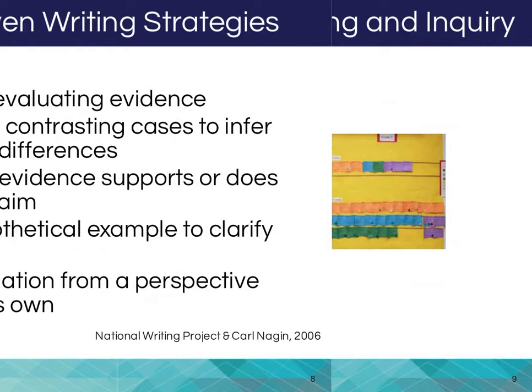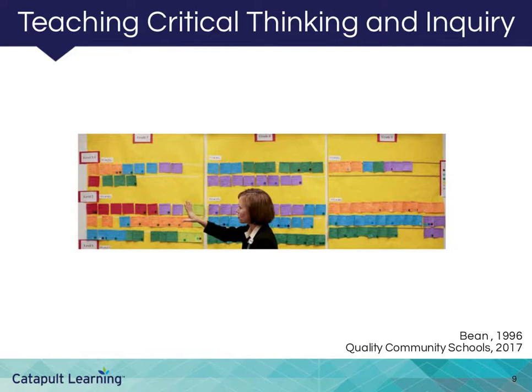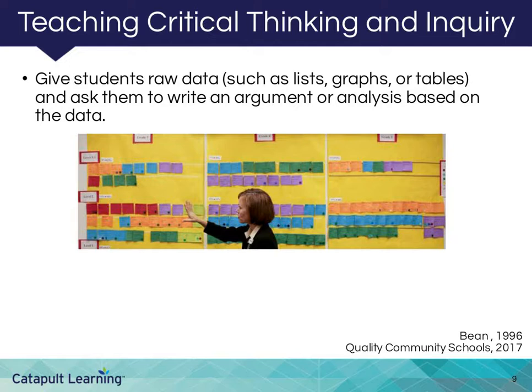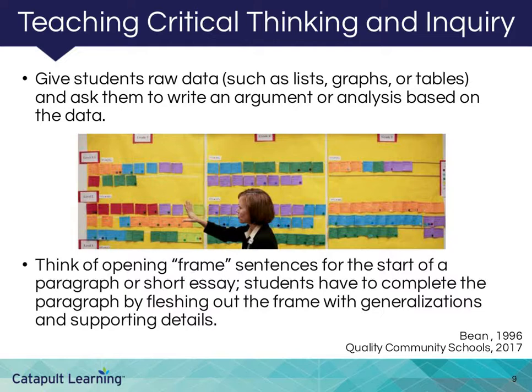Inquiry-driven writing instruction refocuses attention on developing content. In his book Engaging Ideas, author and director of Seattle University's writing program John C. Bean offers these strategies for teaching critical thinking and inquiry: Give students raw data, such as lists, graphs, or tables, and ask them to write an argument or analysis based on the data. Think of opening frame sentences for the start of a paragraph or short essay — students have to complete the paragraph by fleshing out the frame with generalizations and supporting details.